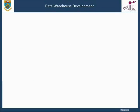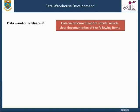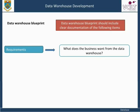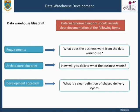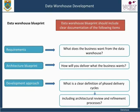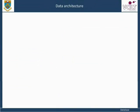A data warehouse blueprint should include clear documentation of the following items: requirements — what does the business want from the data warehouse; architecture blueprint — how will you deliver what the business wants; and development approach — what is a clear definition of phase delivery cycles including architectural review and refinement processes.